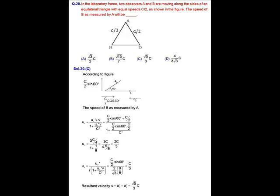So, the x component of speed of observer B as measured by A is 2C by 3. Similarly,